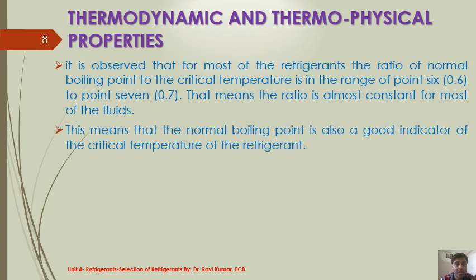This means the normal boiling point is also a good indicator of the critical temperature of a refrigerant. When using an absolute temperature scale for the normal boiling point and the critical temperature, the ratio is about 0.6 to 0.7.